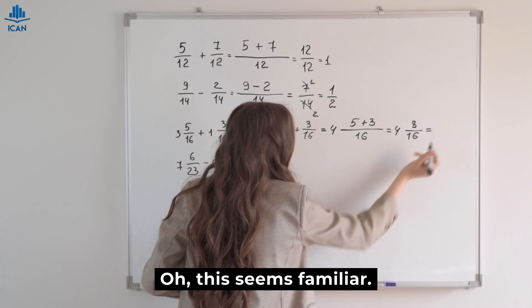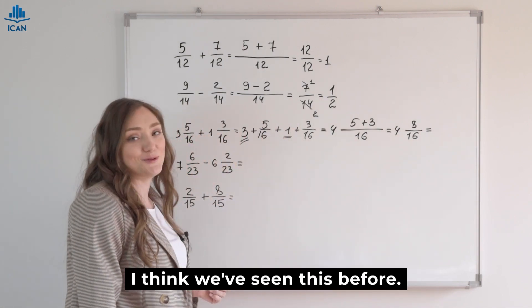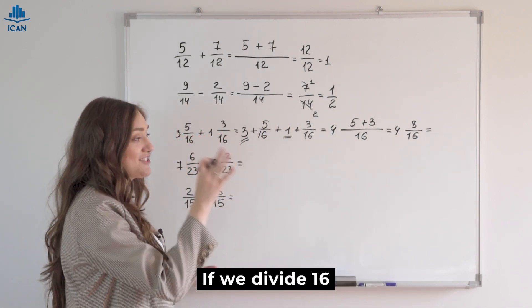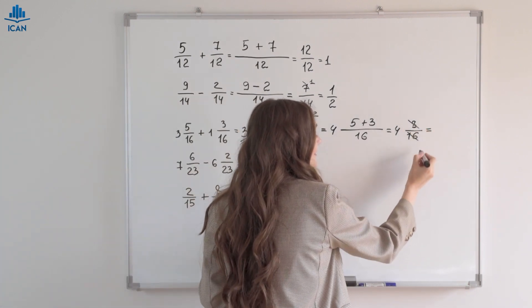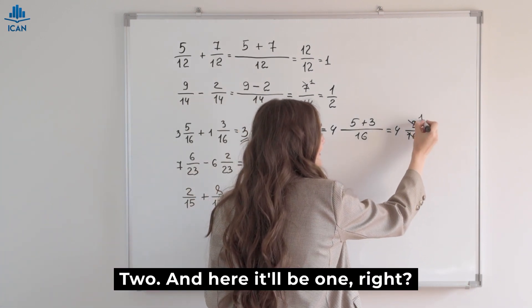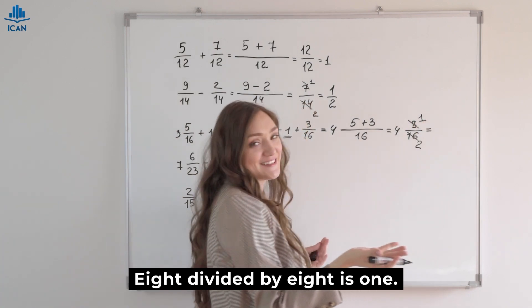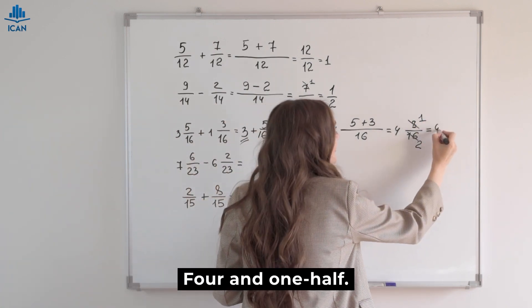Oh, this seems familiar. I think we've seen this before. If we divide 16 by 8, what do we get? 2. And here it'll be 1, right? 8 divided by 8 is 1. 4 and one half.